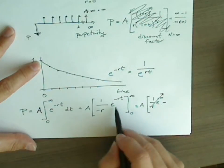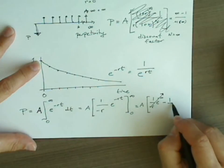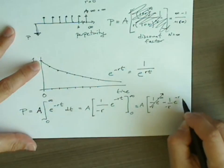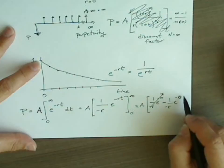Now we have to subtract the same expression evaluated at T equals 0. That's going to be 1 over negative R, e to the negative R, times 0, which is just 0. E to the 0 is just 1.